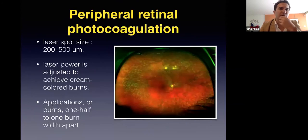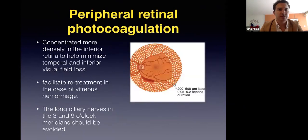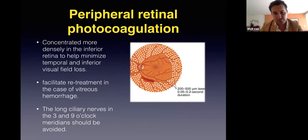For peripheral retinal photocoagulation, the laser spot size is about 200 to 300 microns. Power is adjusted to achieve cream-colored burns. Applications should be one-half to one burn-width apart. Concentrate burns more densely in the inferior retina to minimize temporal and inferior visual field loss, and to facilitate retreatment in case of vitreous hemorrhage. Note that the long ciliary nerves are at the 3 and 9 o'clock meridians, so avoid laser in those meridians.